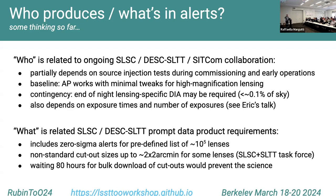On alerts: who produces them and what they contain? This sits at the apex of ongoing collaborations across SLSC, DESC, and colleagues in the simulation community. It depends on source injection tests we're doing, motivated by the high magnification strong lensing case — specifically, will merging image pairs of lensed distant transients survive the alert production pipeline and actually appear in alerts? We're testing this and hope to have progress in coming months. The baseline hope is that the Rubin alert pipeline works with minimal tweaks. If not, we may invoke prior knowledge of where the known lenses are and do a lensing-specific difference image analysis.